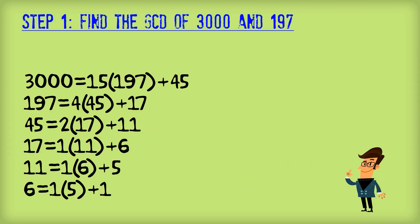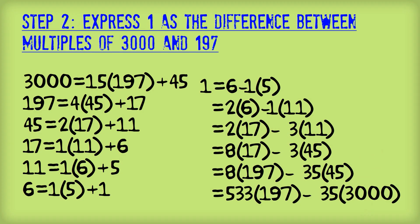So we can move over to step 2, which is to express 1 as the difference between multiples of 3000 and of 197. So to do that, we use what we've just done. We start down the bottom here and we can express 1 as the difference between multiples of 6 and 5. That's just the last line changed around slightly.